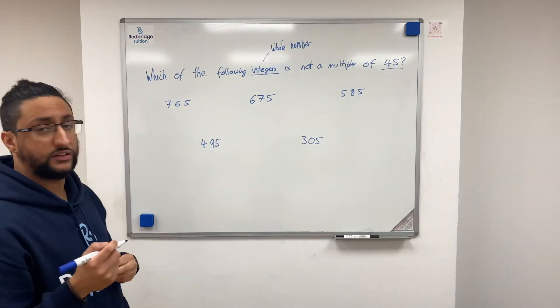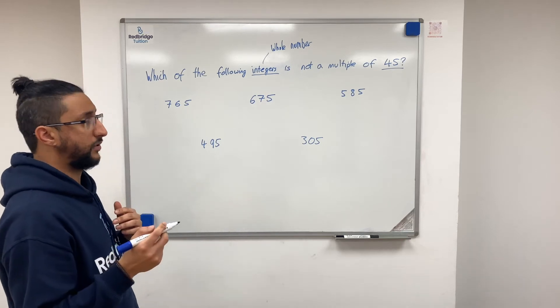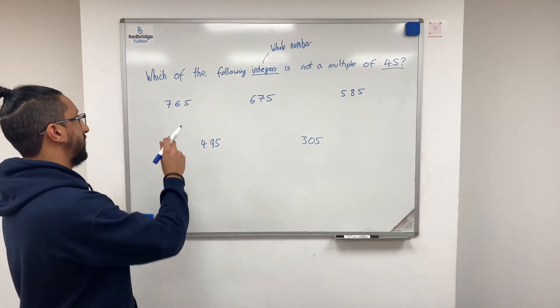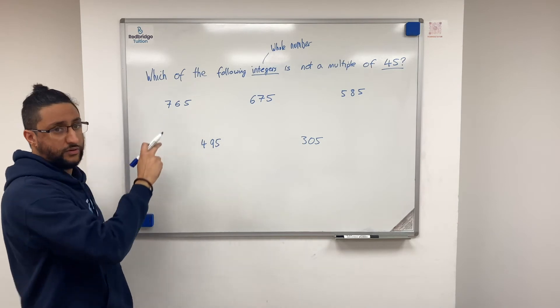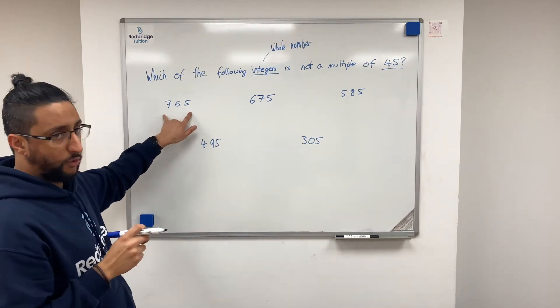Now the divisibility check to see whether they're divisible by 9 is the same as the check for 3, which is you add the individual digits together. If that number is divisible by 9, then the overall number will be as well.